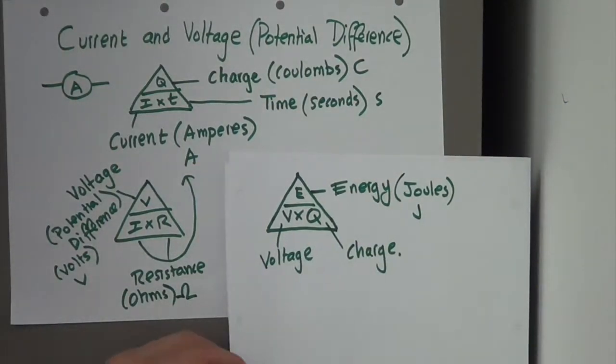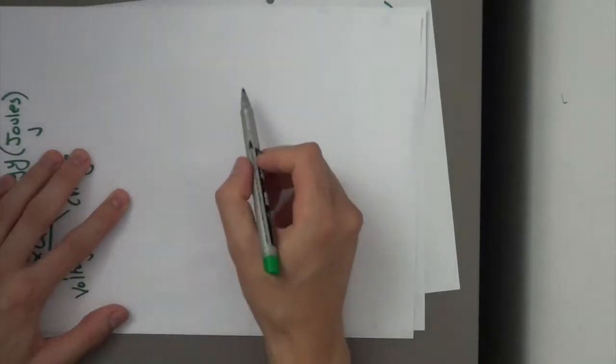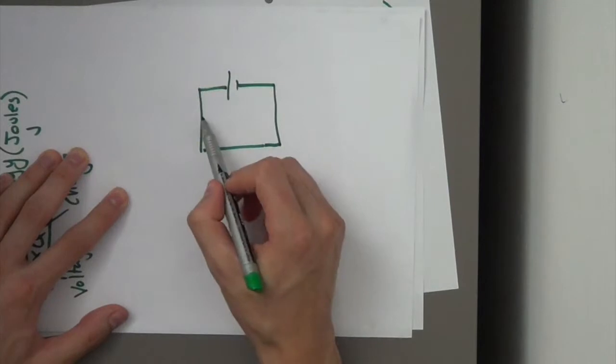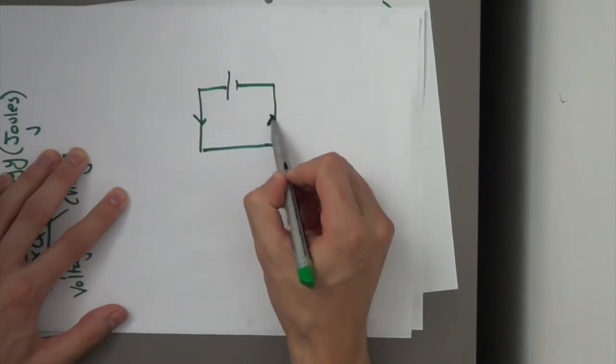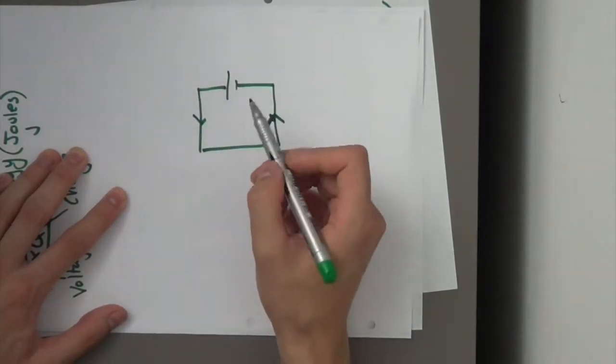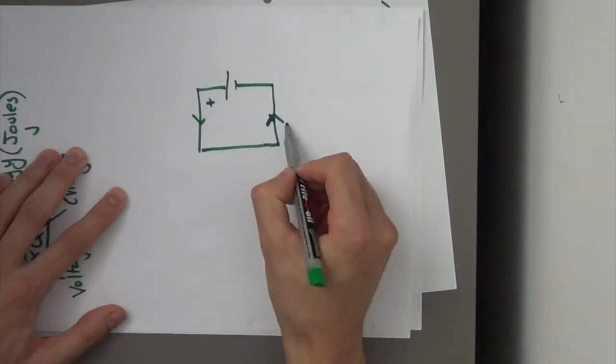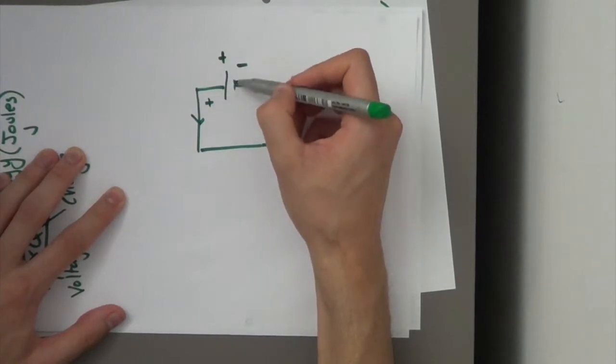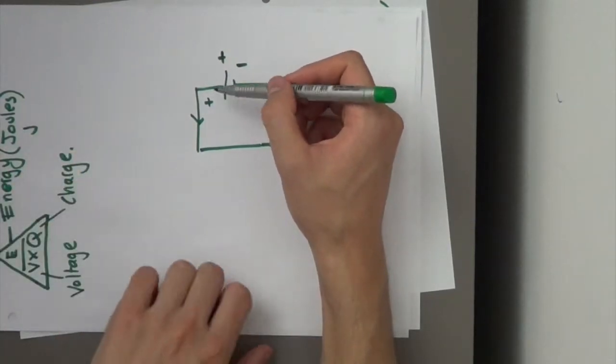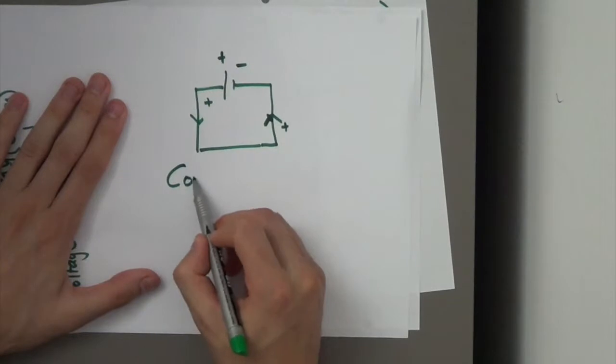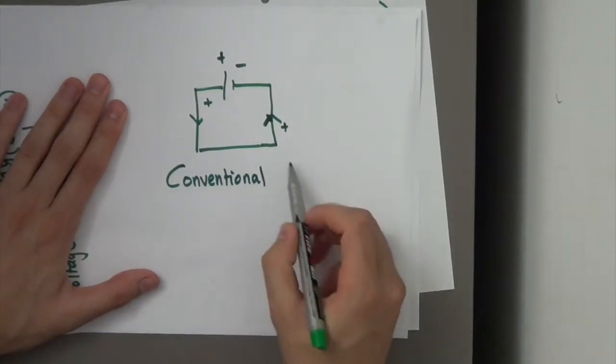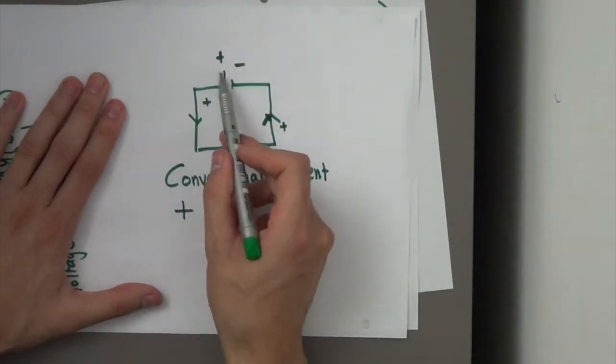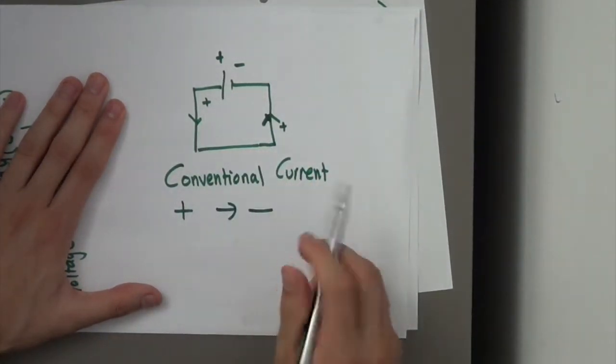And just briefly, for historical reasons, they originally thought that charge, the charged particles were positive particles. So, if this was our circuit, this is the positive end of the battery, this is the negative end of the battery. What we call conventional current. This is when we have charges going from the positive end of the battery to the negative end of the battery.